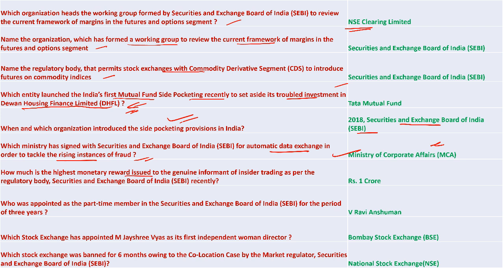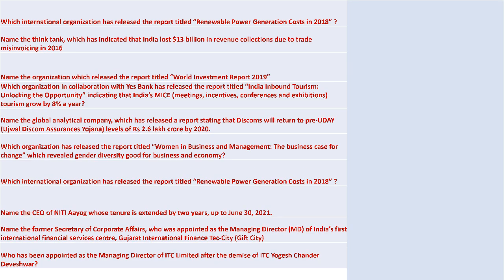One crore is the highest monetary reward issued to a genuine informant of insider trading as per SEBI. V. Ravi Anshuman was appointed as part-time member of the Securities and Exchange Board for a period of three years. Bombay Stock Exchange appointed M. Jai Shri Vyas as its first independent woman director. NSE was banned for six months owing to its co-location case by market regulator SEBI.